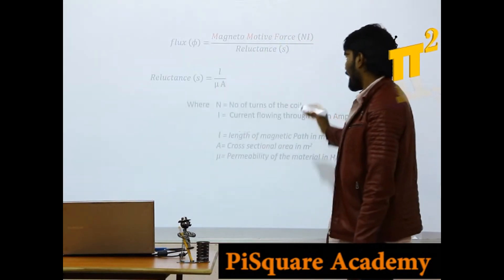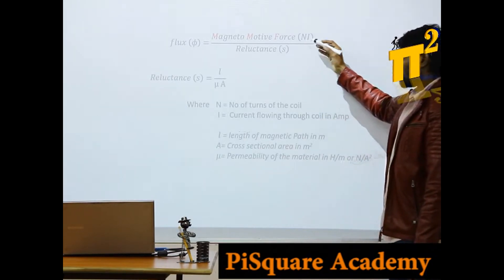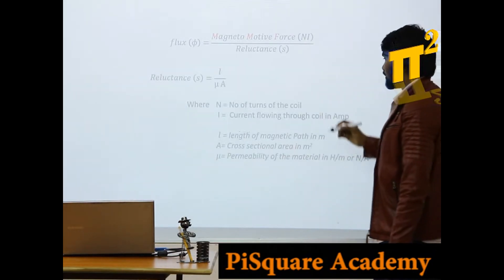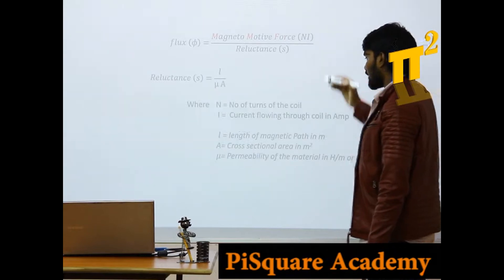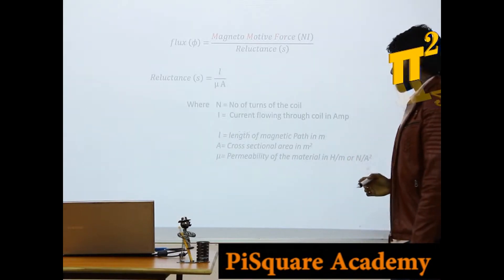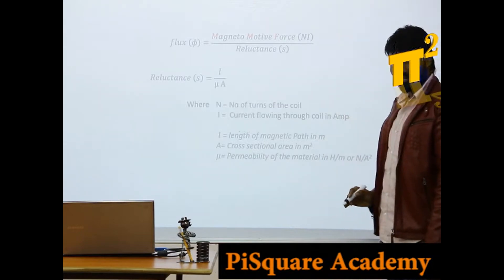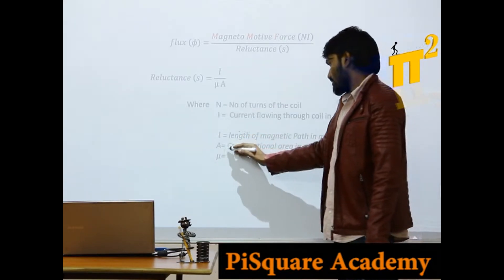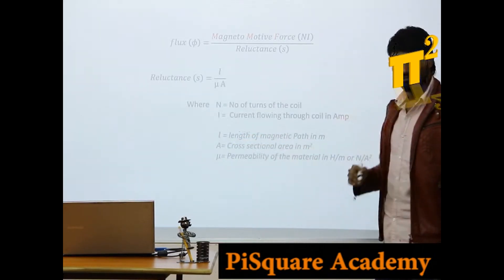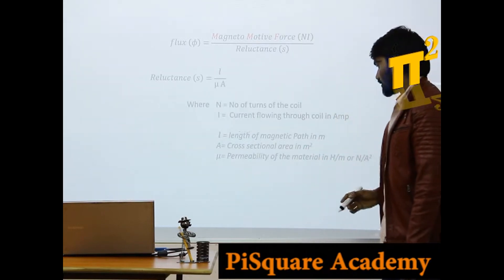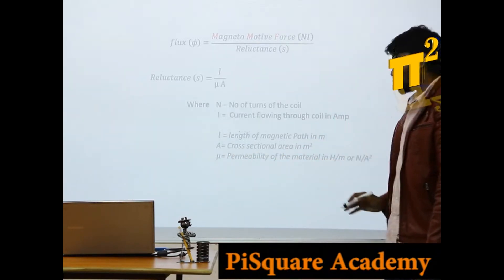Now, N is number of turns in the coil, I is current flowing through the coil, L is length of magnetic path, A is cross sectional area of that path, mu is permeability of the magnetic material.